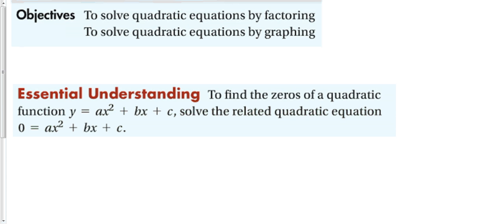Our essential understanding is that to find the zeros of a quadratic function, y equals ax squared plus bx plus c, we must solve the related quadratic equation ax squared plus bx plus c equals zero, which means that any time we're going to try to solve these quadratic equations, the most important step is to make sure that it is set equal to zero.